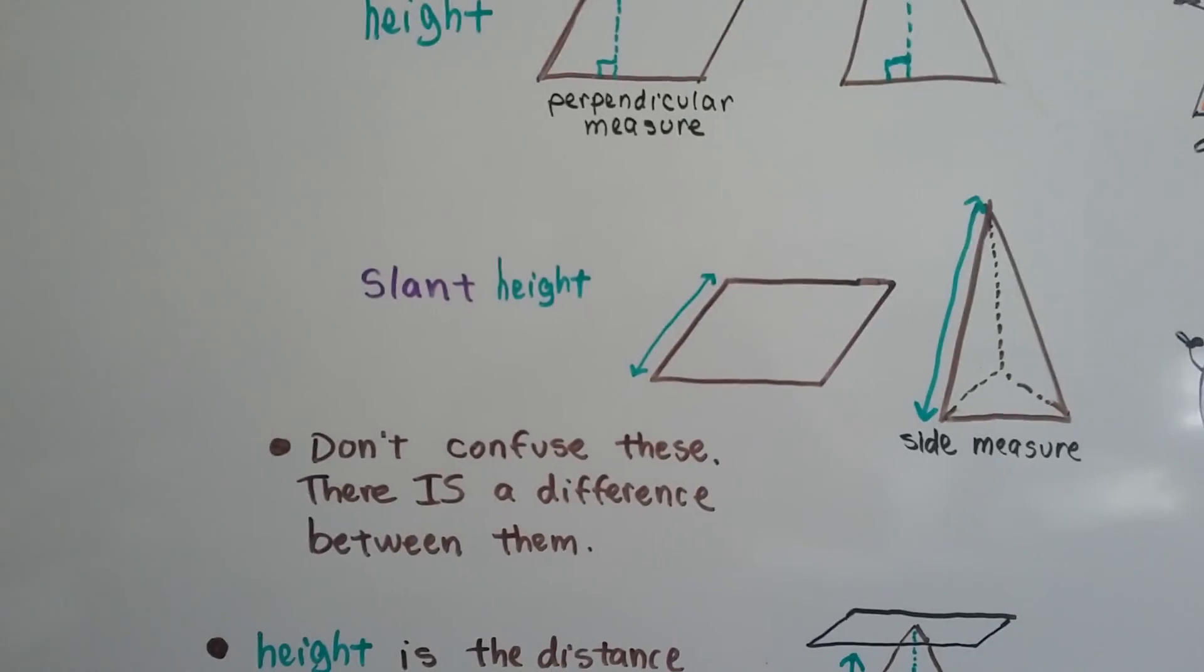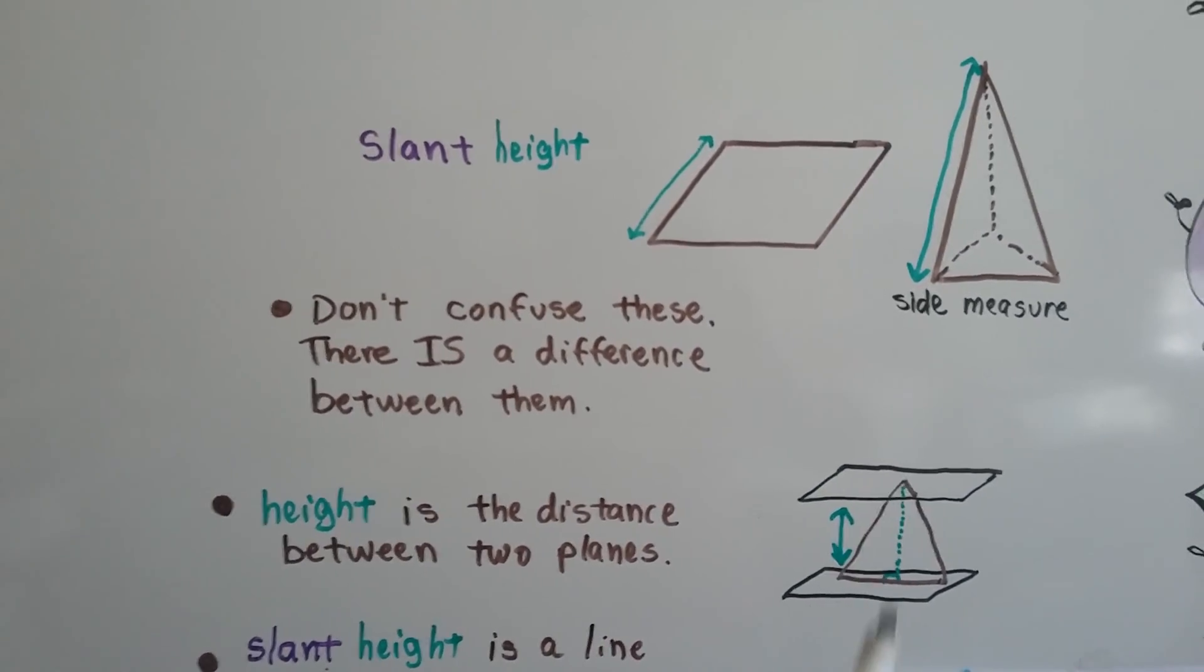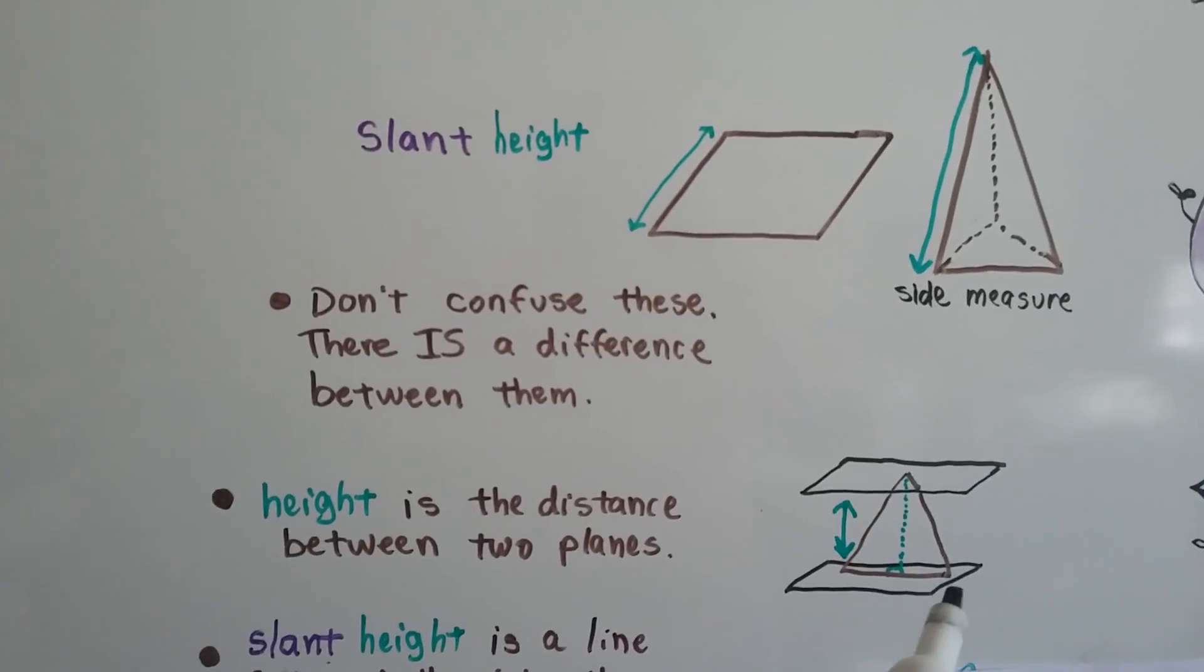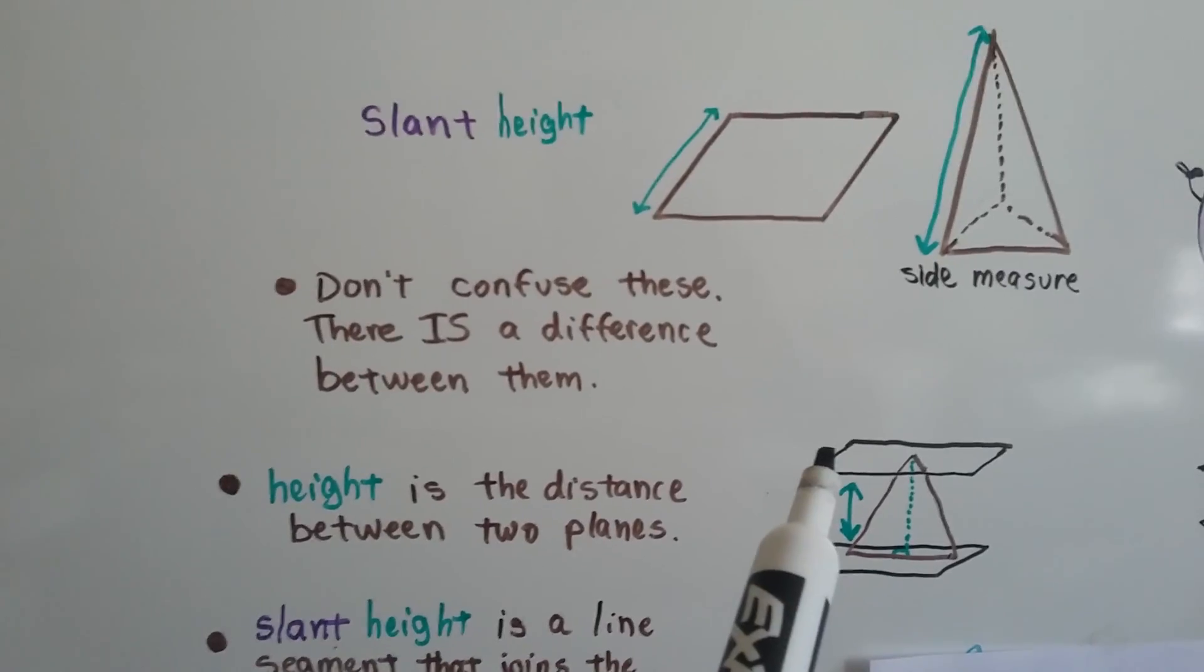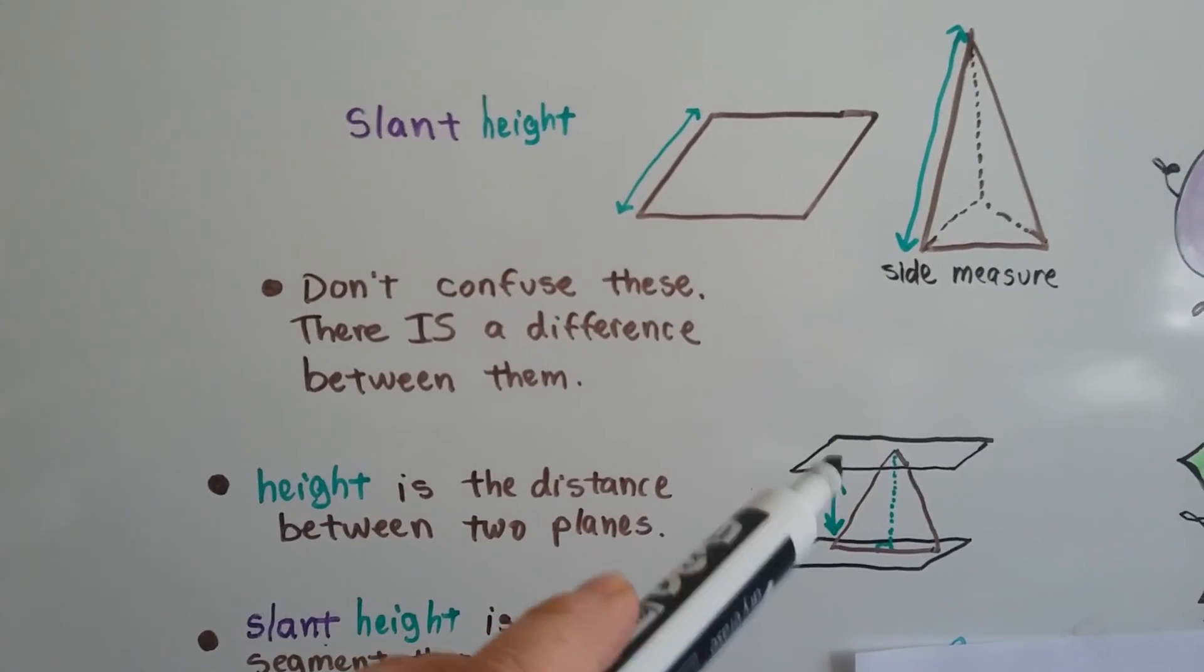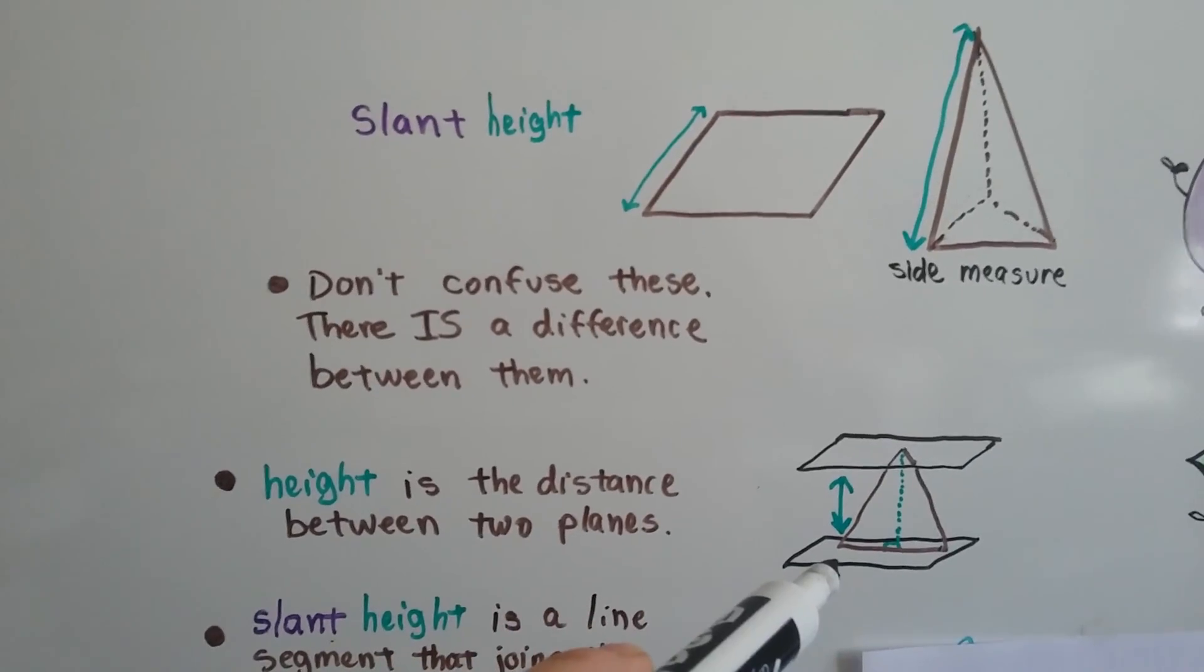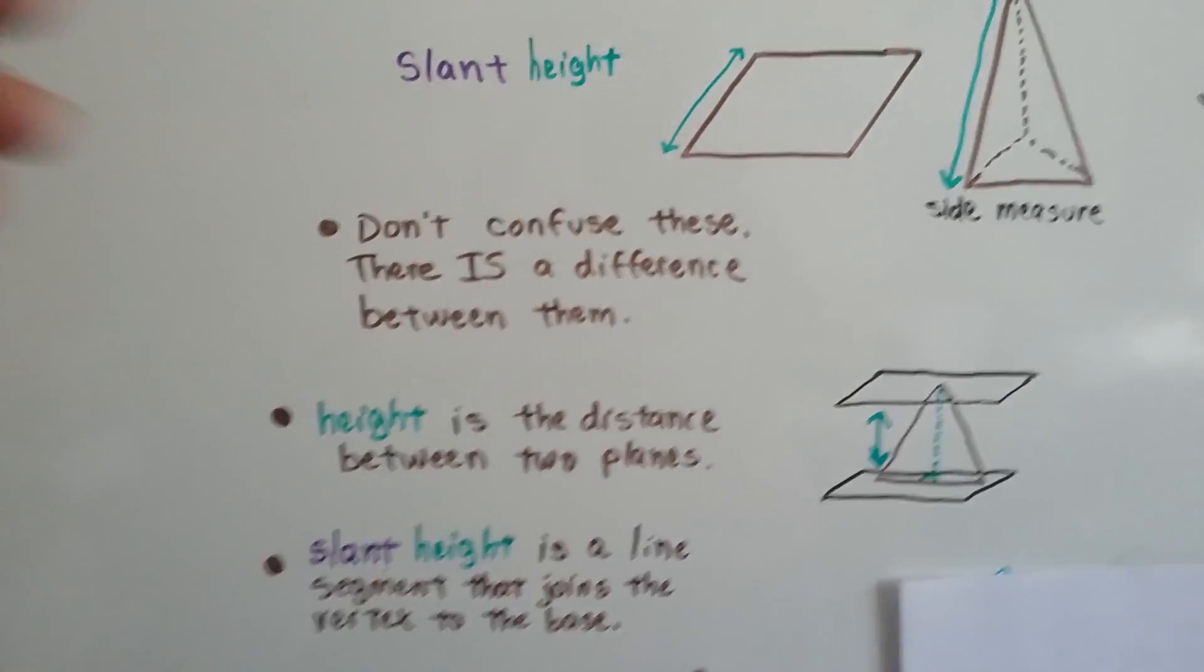Now don't confuse these two because there's a big difference between them. The height is the distance between two planes. So if you had a triangle and you put it on top of a piece of paper or a cardboard and then put another cardboard on top of it at the vertex, the distance between the two pieces of cardboard would be its height. Its slant height, though, would be this measure coming down the side.